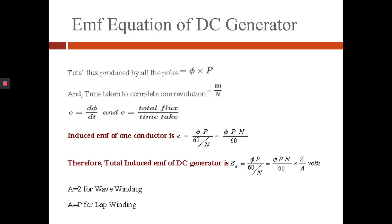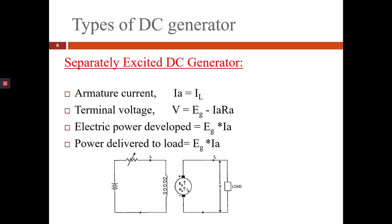Therefore, total induced EMF of DC generator is E equals PhiPN divided by 60 times Z by A volts. Here A equals 2 for wave winding and A equals P for lap winding.